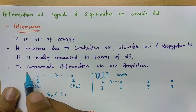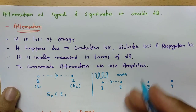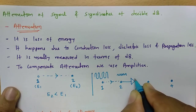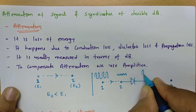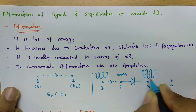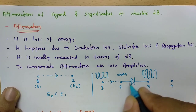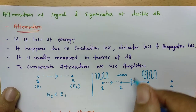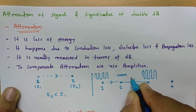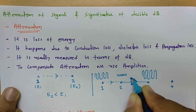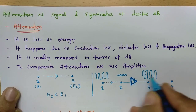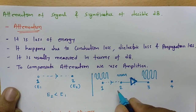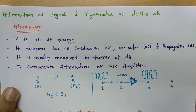To compensate for attenuation, we use an amplifier. If I use an amplifier, I can amplify the signal — so at point 3 we can have a strong signal again. This amplification depends on what type of amplifier is used, and it is based on the gain of the amplifier. The amplifier boosts the signal and increases the gain of the signal.